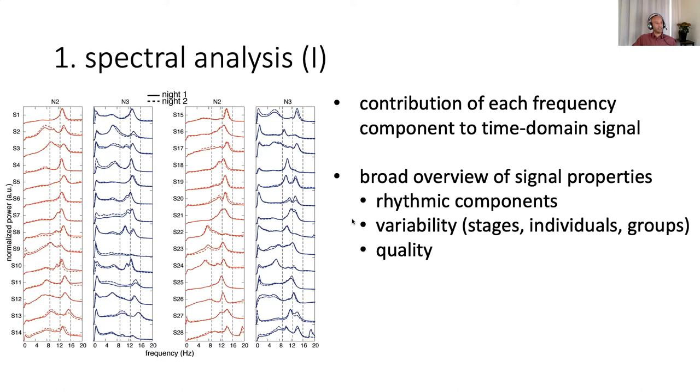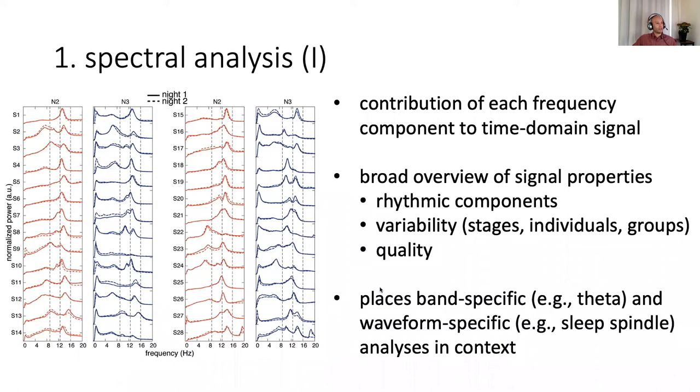And then a decent proportion of individuals also show a peak at the slow spindle frequency around 10 hertz. These plots give you a very broad overview of signal properties, the rhythmic components that are present, but they also tell you about variability between stages and individuals. Another reason these plots are useful is they give you an idea of the quality of your signal.